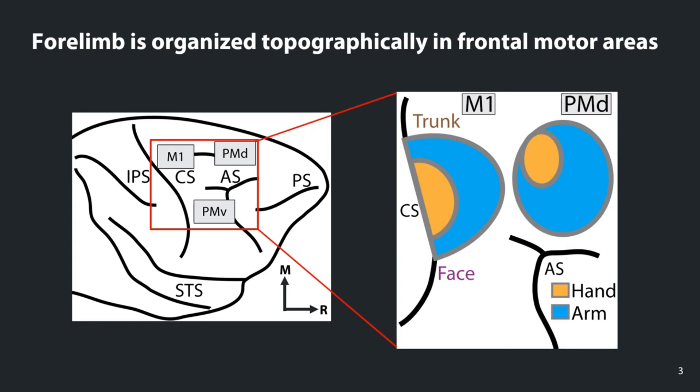We can think of Penfield's homunculus, where along the strip of the central sulcus where primary motor cortex is, different parts of the brain are going to be responsible for eliciting different types of movements. Here we have a cartoon version of how the forelimb is represented in both M1 and PMD. The hand in primary motor cortex is represented in the central core along the central sulcus surrounded by the arm, and in PMD you primarily get arm responses with a little bit of hand responses located in the caudal medial corner of PMD.